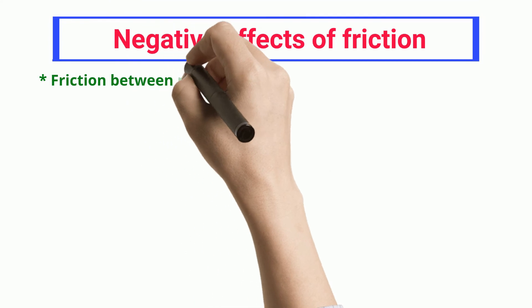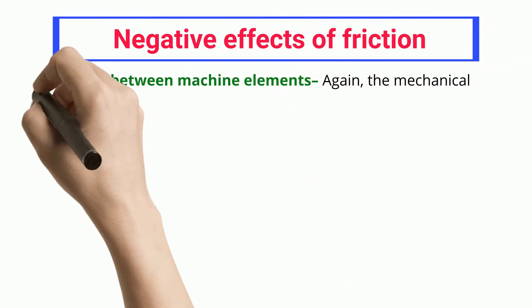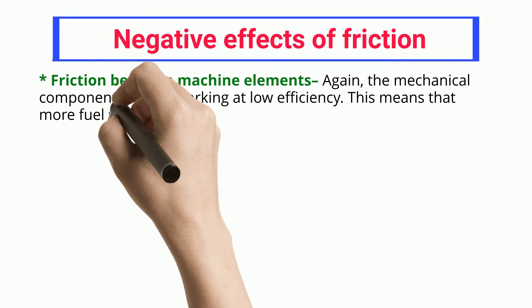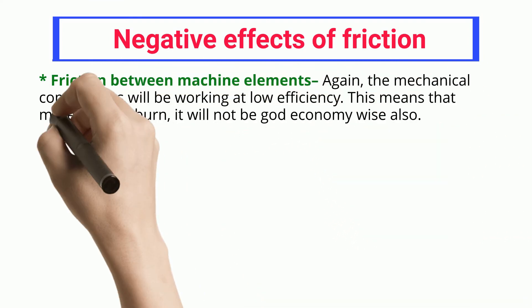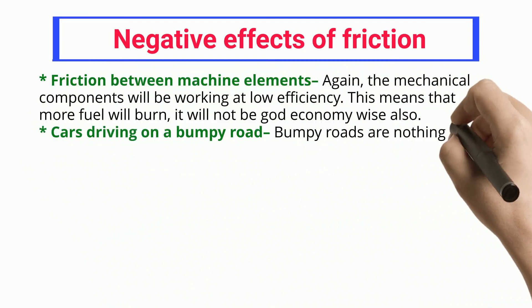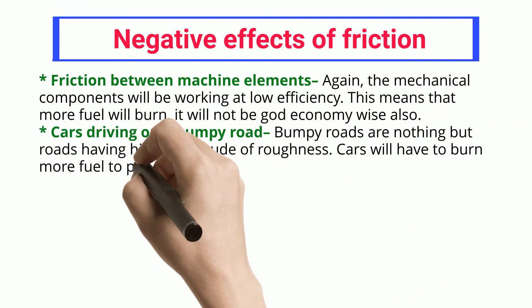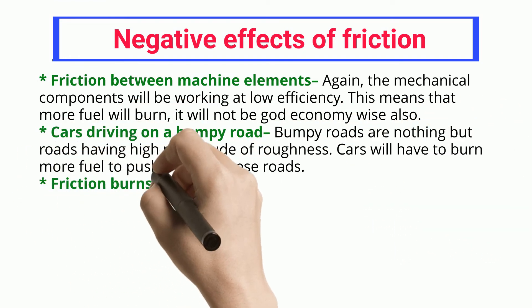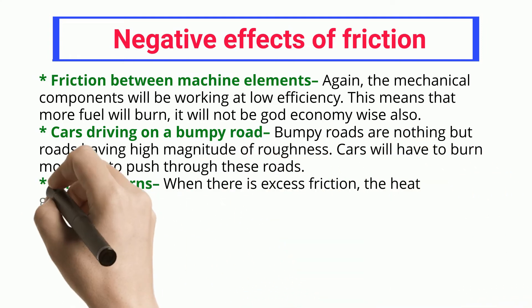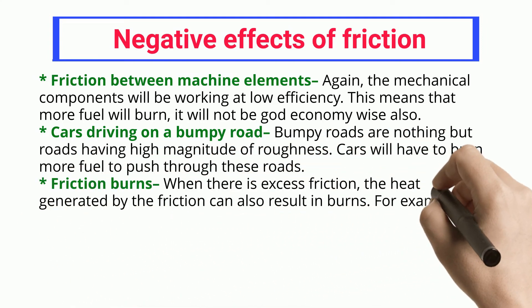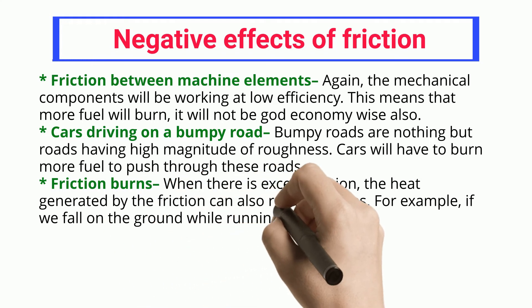Friction between machine elements: Again, the mechanical components will be working at low efficiency. This means that more fuel will burn; it will not be good economy-wise also. Cars driving on a bumpy road: Bumpy roads are nothing but roads having high magnitude of roughness. Cars will have to burn more fuel to push through these roads.